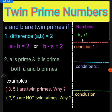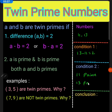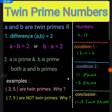We consider another example: 11 and 13. Thirteen minus eleven equals two. Eleven is a prime number and thirteen is also a prime number. So the conclusion is 11 and 13 are twin primes.